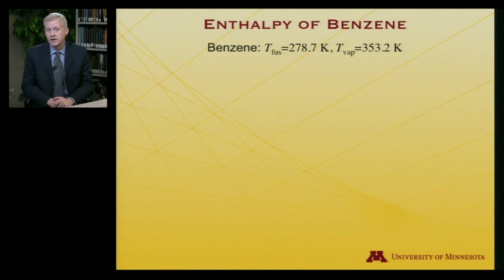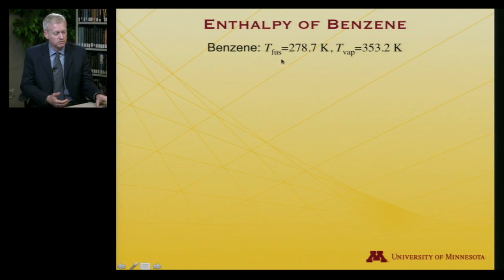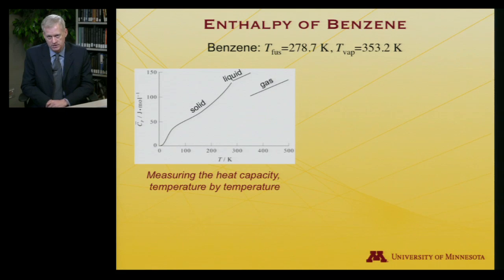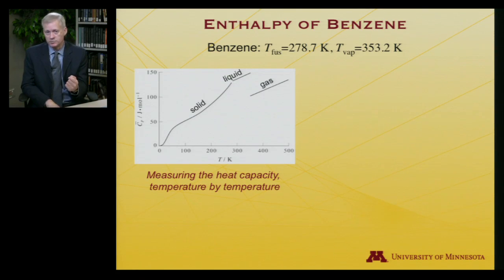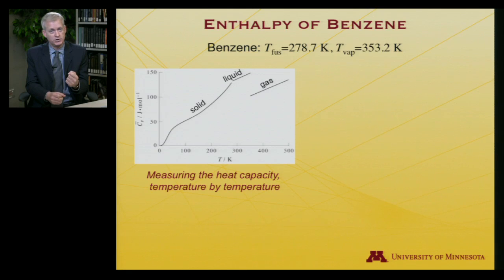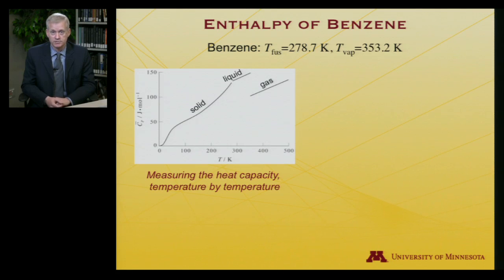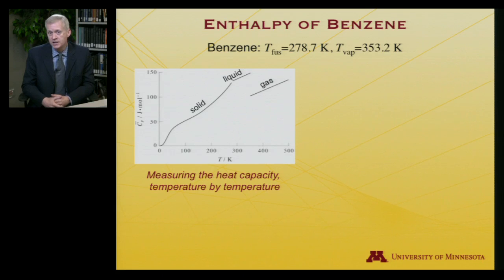Benzene — an aromatic organic molecule found in oil — has a melting point of 278.7 K and a boiling point of 353.2 K. If you measure its heat capacity temperature by temperature, it's relatively straightforward: you put a thermometer in the substance, add heat in a controlled quantifiable fashion, and measure how much you need to put in to raise it one degree. Maybe that's measuring liters of methane burned in a Bunsen burner, or some other quantifiable heat source.